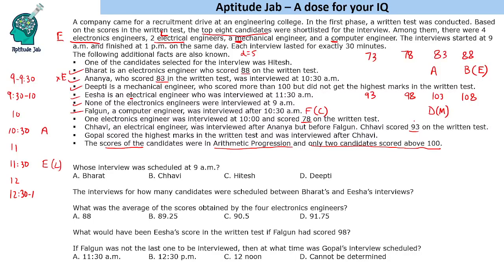One electronics engineer was interviewed at 10 AM and scored 78. Chavi is an electrical engineer interviewed after Ananya but before Fagun. Chavi scored 93 on the written test.